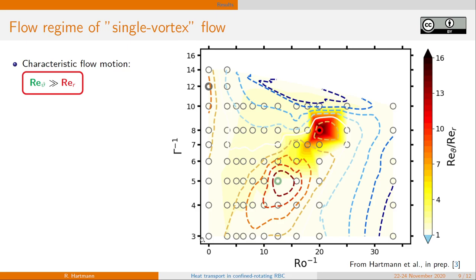And indeed, what we see here in the parameter space of rotation and confinement again, only at the single vortex maximum, and very limited around it, we see this large ratio of azimuthal over radial motion. So this clearly is an identifier for this single vortex flow regime.